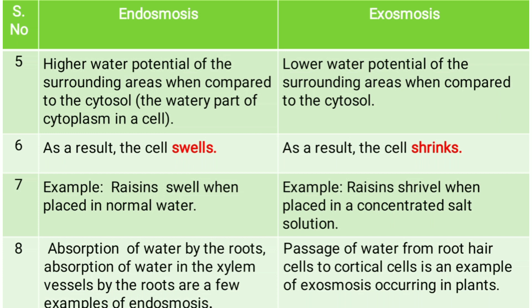Some more examples of endosmosis: absorption of water by the roots is also an example of endosmosis. Absorption of water in the xylem vessels by the roots is also an example of endosmosis. For exosmosis, the passage of water from root hair cells to cortical cells is also an example of exosmosis.